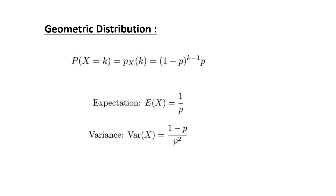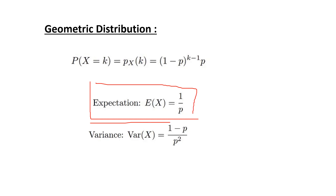The expected value of the geometric distribution is given by 1 over p, where p is the probability of success, and the variance is given by 1 minus p over p squared.